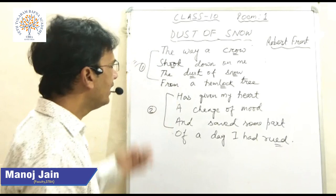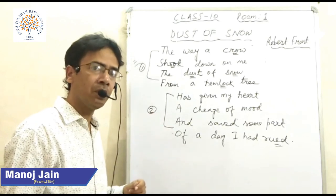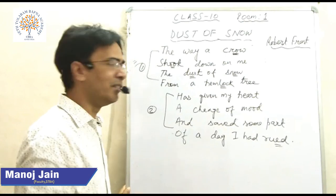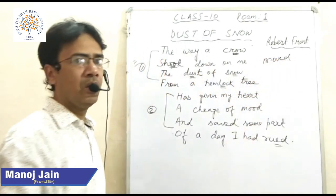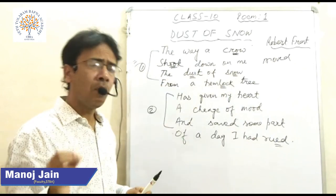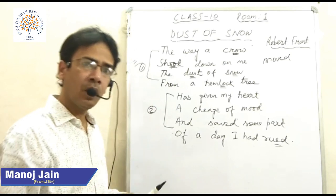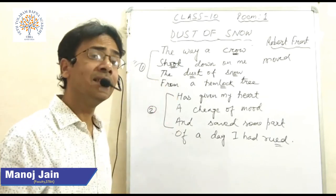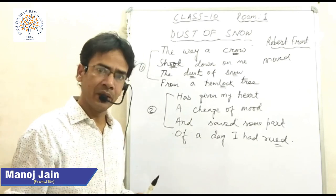There are some important words which I have underlined. The first word is crow — crow is a symbol of an inauspicious thing. In the second line, the word 'shook' means shook off. In the third line, two important words: first is 'dust' — dust is commonly associated with soil, but here it is associated with snow. Snow is a symbol of peace and joy. In the last line of the first stanza, we have 'hemlock' — hemlock is a tree which is very poisonous with white flowers, often associated with death or sorrow.